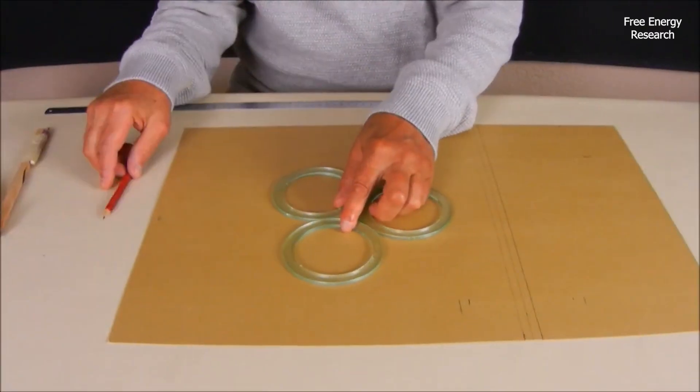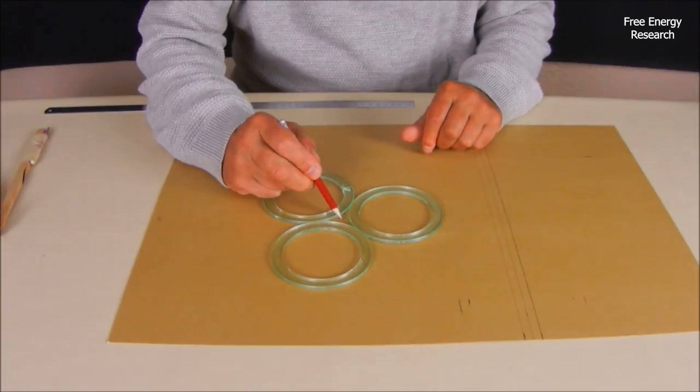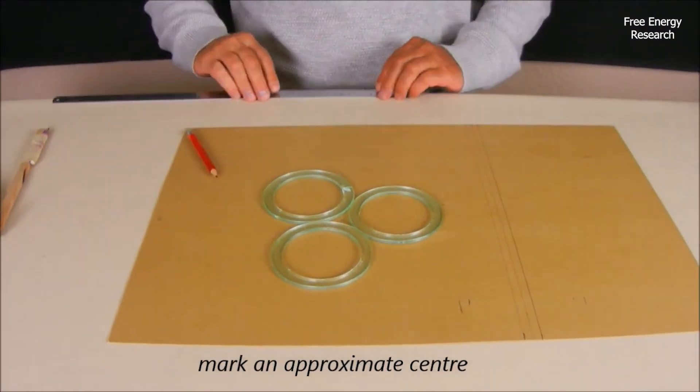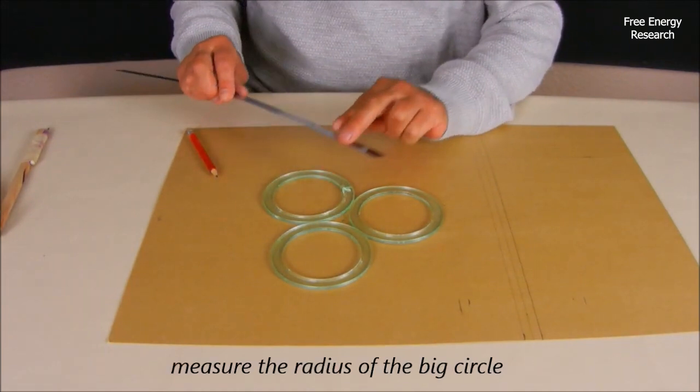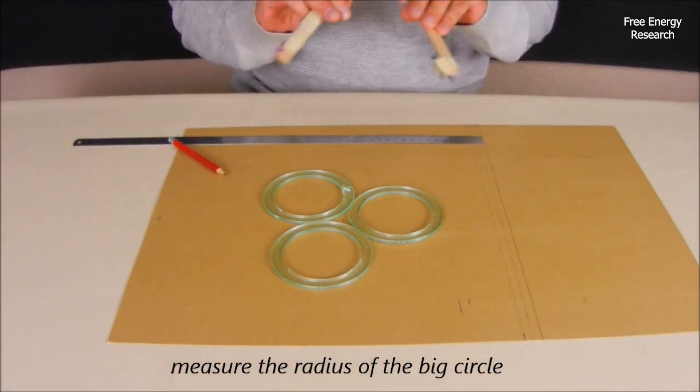We start by designing the wheel, carefully marking the center and using circular guides to map out the internal chambers. Precision is key, ensuring that every measurement aligns perfectly before moving forward.